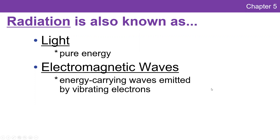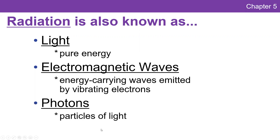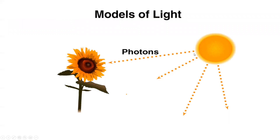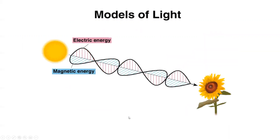If you take an electron and vibrate it up and down, it'll generate waves going out from there. But sometimes light tends to act like ping pong balls and they act like particles as they move from one object to the other, like from the sun to the surface of the earth — bundles of energy called photons, particles of light.